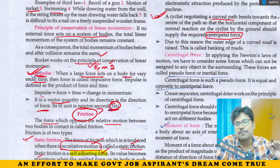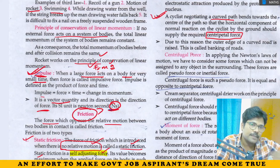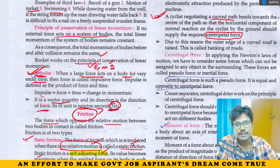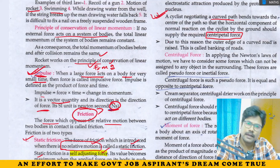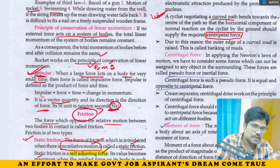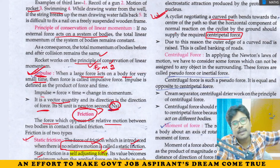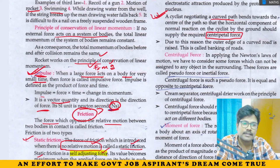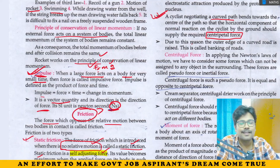When the cyclist bends, the component F cosθ balances the weight and the horizontal component acts as the centripetal force. Due to this, the cyclist does not fall down. The resultant force acts as centripetal force towards the center of the curve.